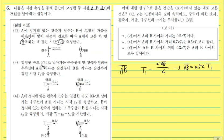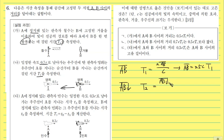일정한 속도 0.7C로 날아가는 우주선에 탄 관측자 영희는 우주선이 A를 지나는 순간부터 B를 지나는 순간까지 걸린 시간 T2를 측정했는데, 영희가 봤을 때는 AB라는 거리가 운동을 하죠. 그러니까 AB는 비정상이에요. 영희가 측정한 비정상인 거리 AB는 0.7C × T2로 나타낼 수 있겠습니다.